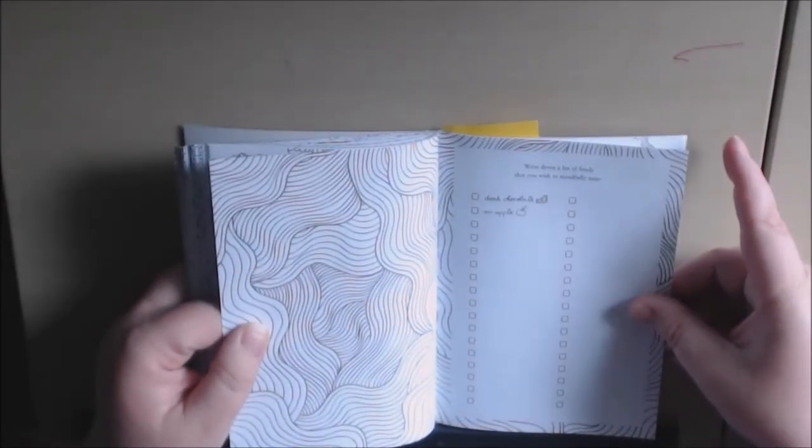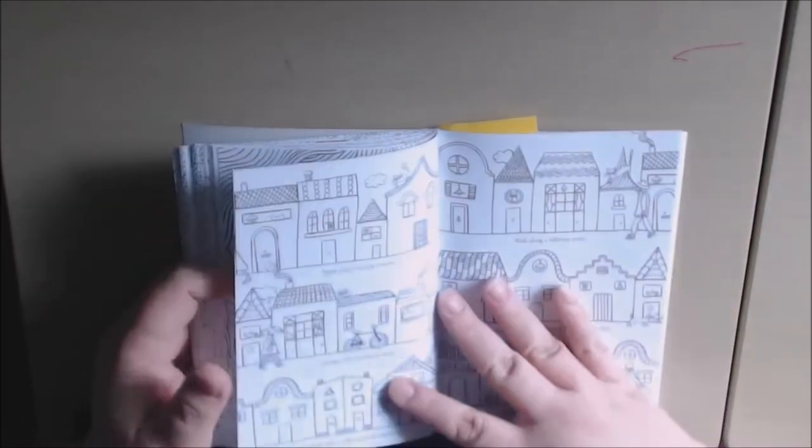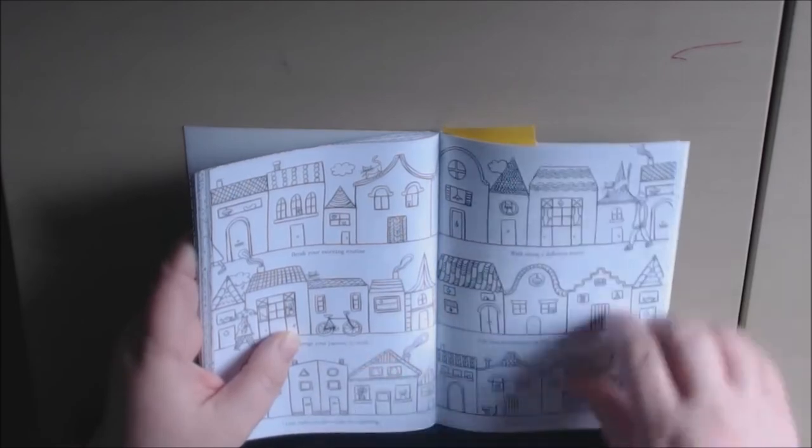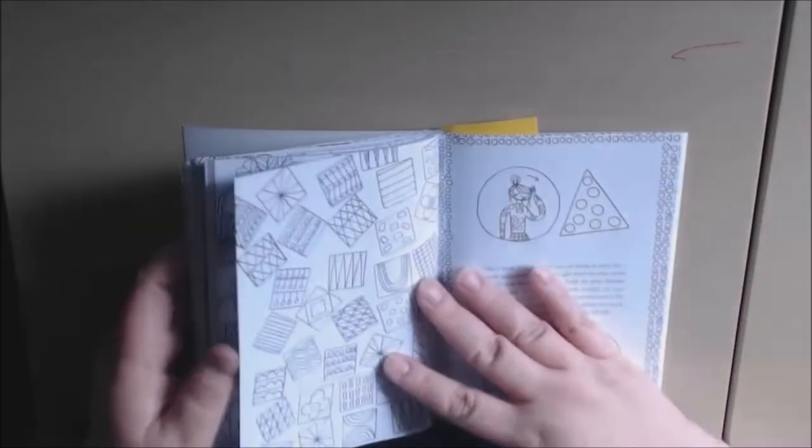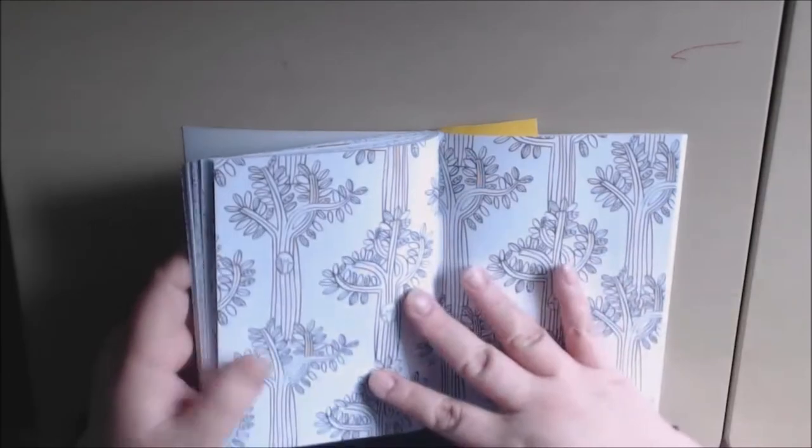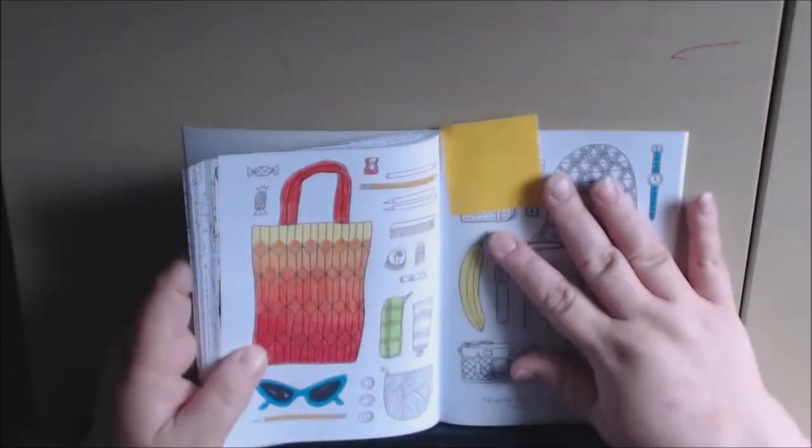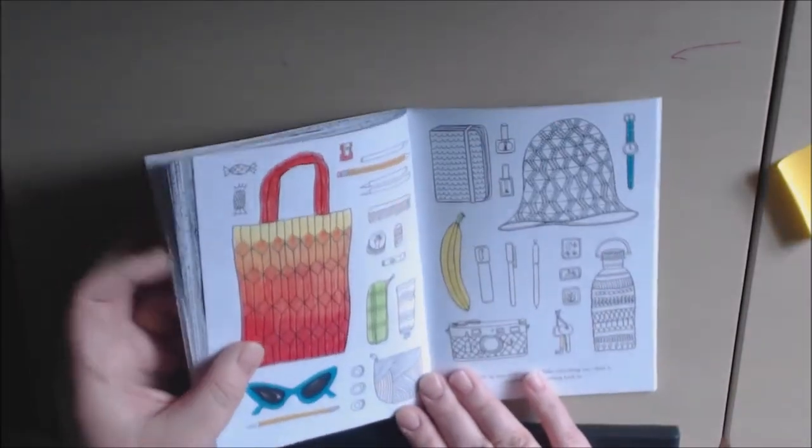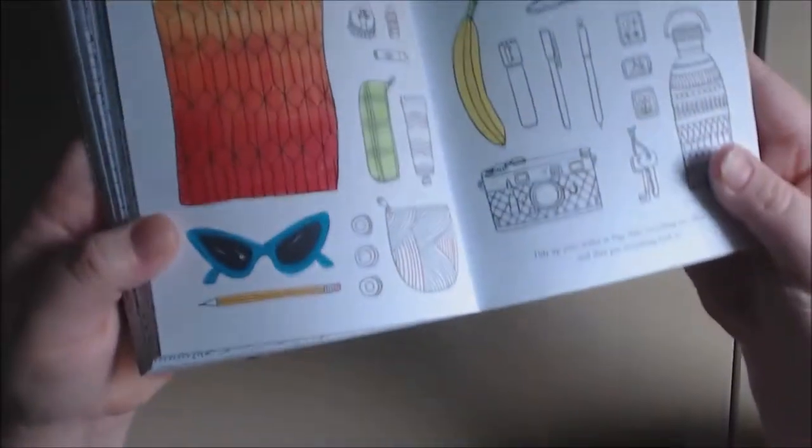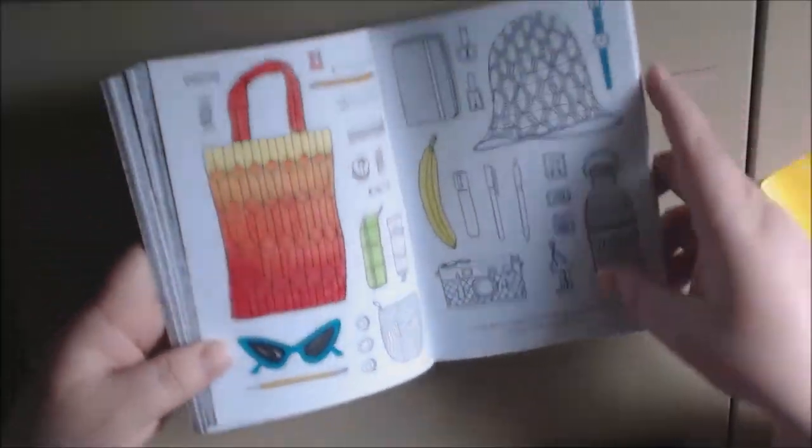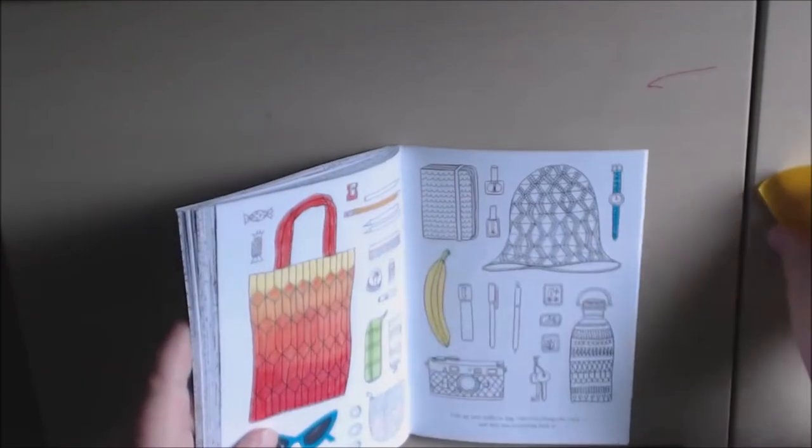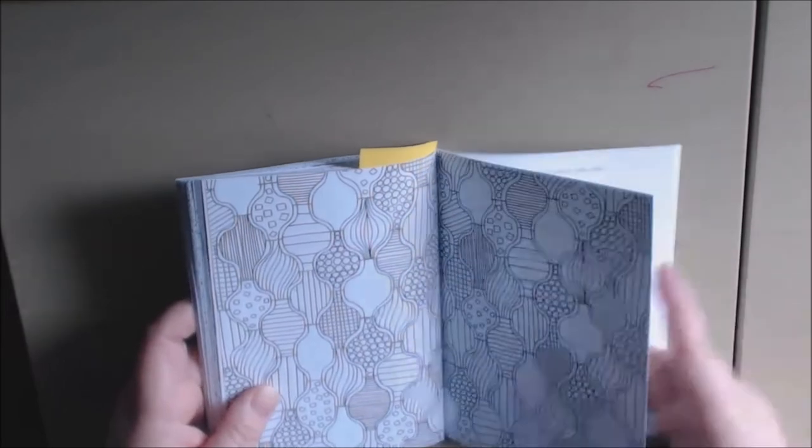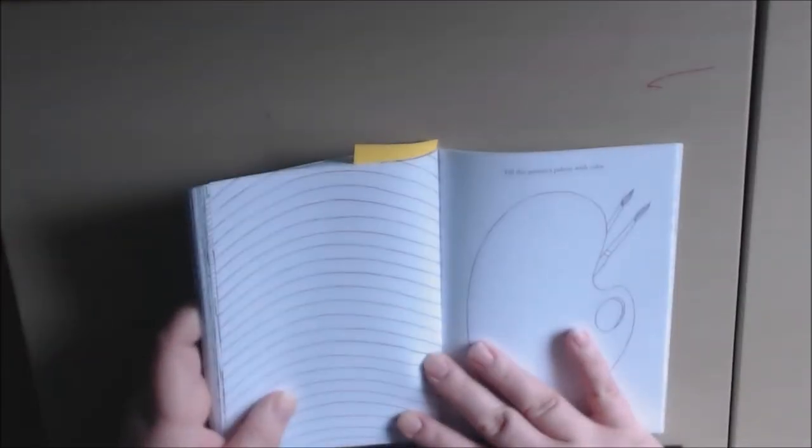Write down the list of foods that you wish to mindfully taste. I like the little town. This is when I started. Looked like she was going to the beach with her little beach bag. I just like the colors, I thought they were cute.